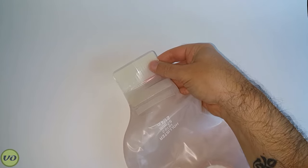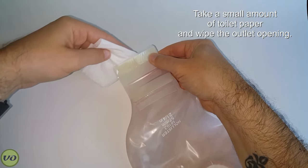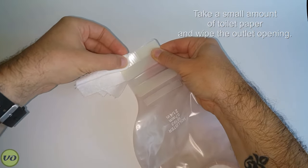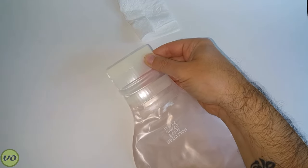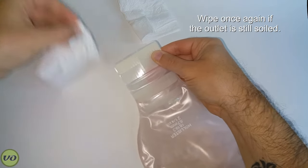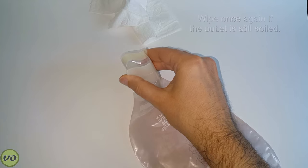Now once the stool is out, what I generally do is I'll take a piece of toilet paper, I'll clean the top of the outlet, and I may do this a couple times depending on how soiled that outlet becomes. But that allows me to just clean it up for when I actually open it up.